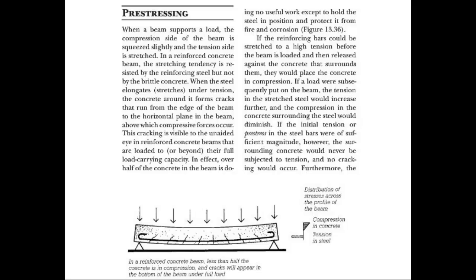Imagine taking a rectangular piece of styrofoam, drilling a hole lengthwise, threading a rubber band through it, putting the rubber band under tension, stretching it out and pinning it in place. If the rubber band is in the bottom of the styrofoam, it tends to give the piece a slight arch or camber. We can do the same thing with steel — soft steel will stretch — and there are two ways to do pre-stressing in concrete.